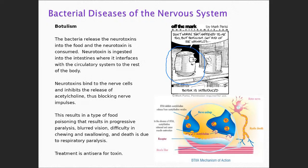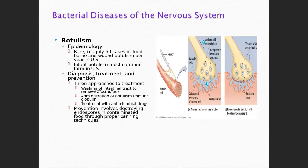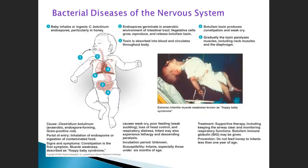The toxins bind to nerve cells and block the reuptake of acetylcholine. Because of that, your nervous system doesn't work and you develop flaccid paralysis. Flaccid paralysis means the nervous system is not working at all — the person has no control over the body. Be sure you know that the etiology of flaccid paralysis is Clostridium botulinum.